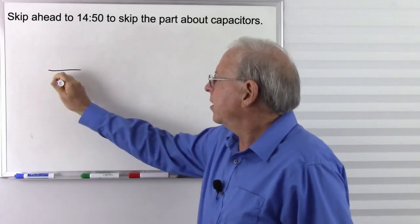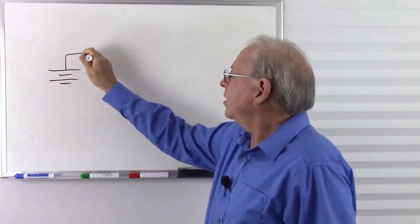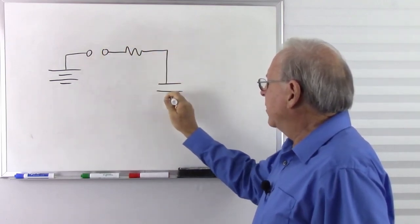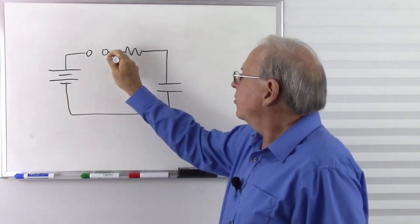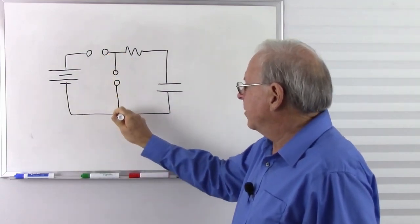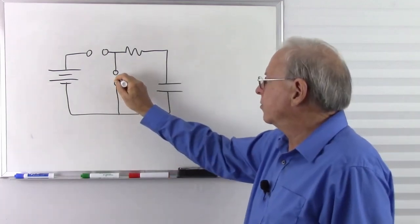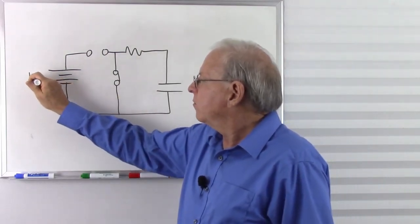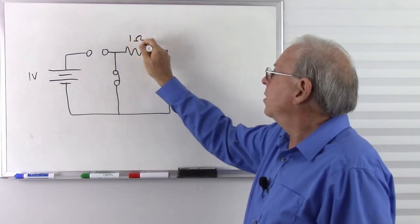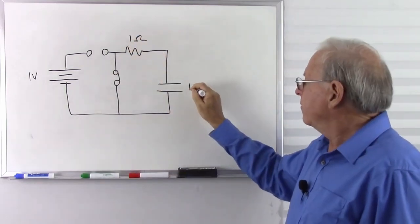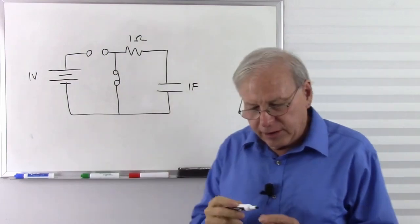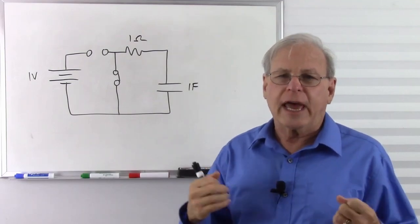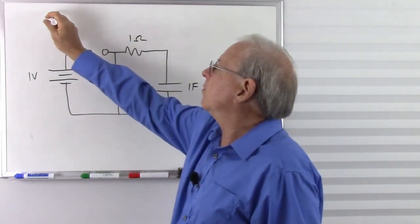Let's draw our test circuit. We have a battery, a switch, a resistor, and a capacitor. We'll put another switch to ensure the capacitor is completely discharged. We have a 1 volt battery, a 1 ohm resistor, and a 1 farad capacitor. If we take the resistance times the capacitance, we get the capacitor time constant, represented by the Greek letter tau.